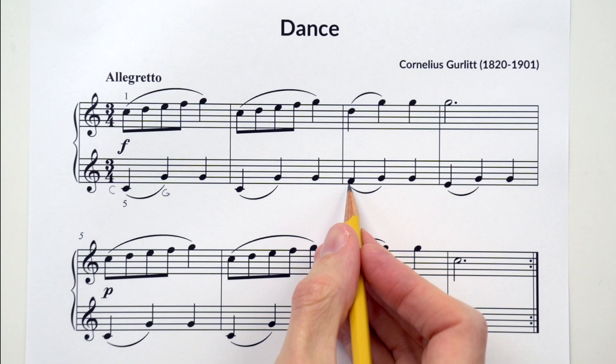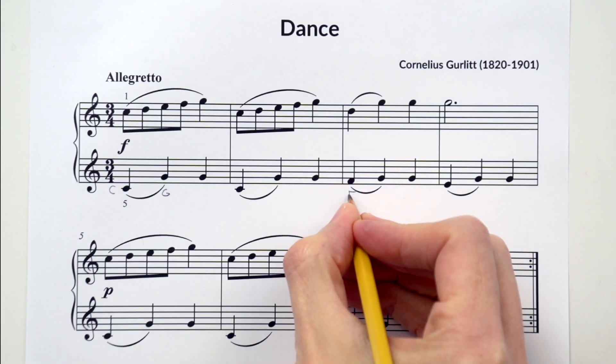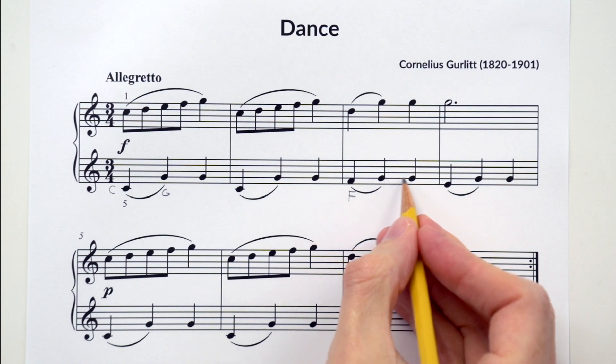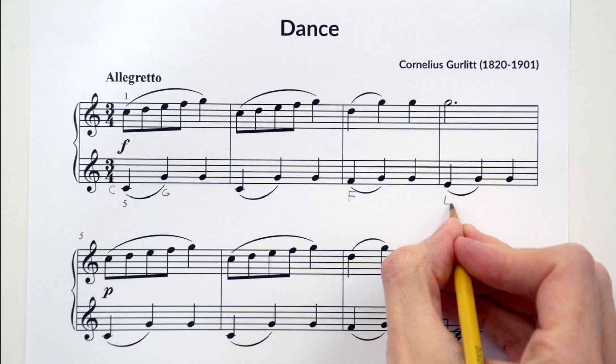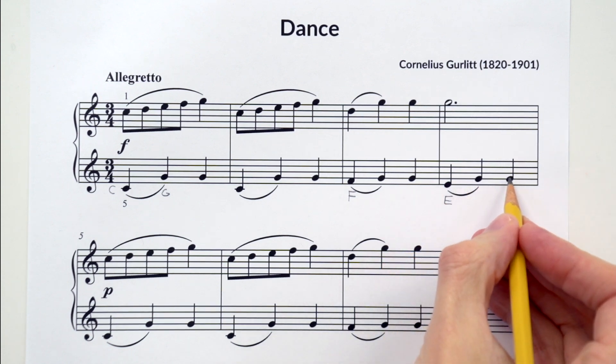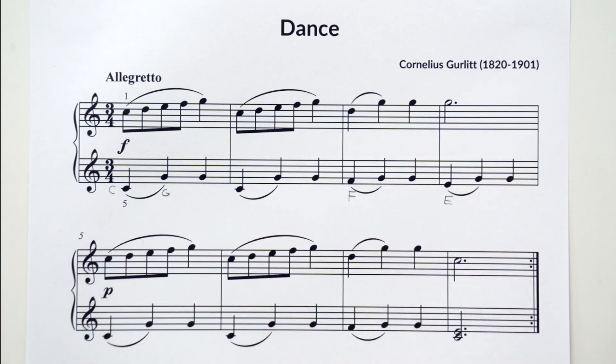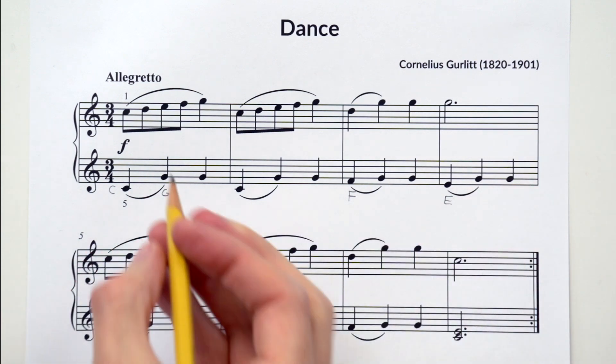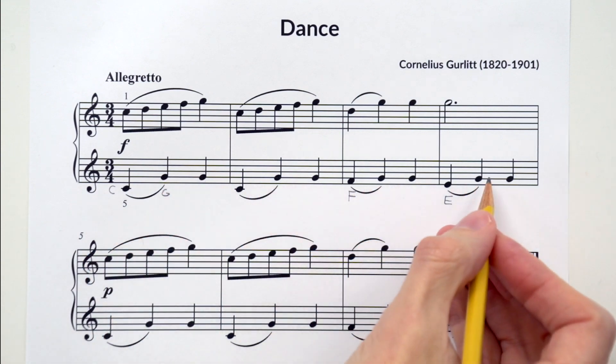What letter do you see here? Tell me its letter name. If you said F, you're correct. F G G. What letter do you see here? If you said E, you're correct. E G G. Do you notice any kind of pattern going on here? If you look at the second and third notes of each measure, it's a repeated G.